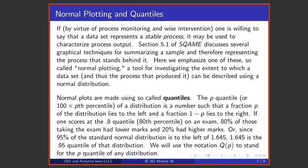Normal plots are made using so-called quantiles. A quantile for a data set is another word for a percentile. So if I talk about the 0.95 quantile, I'm talking about the 95th percentile, the 0.8 quantile, I'm talking about the 80th percentile.